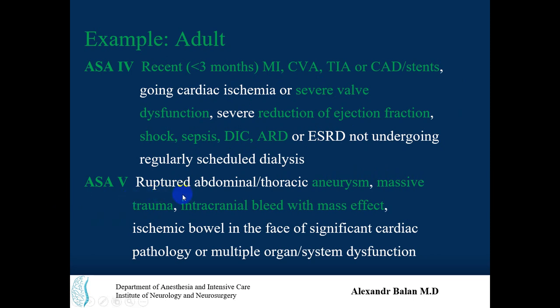ASA 5 patients include those with a ruptured aneurysm, massive trauma, intracranial bleed with mass effect, ischemic bowel, or multiple organ or system dysfunction.